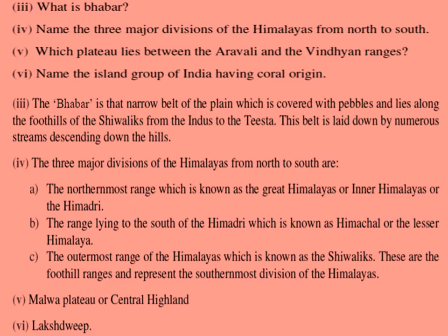Next question: name the three major divisions of the Himalayas from north to south. The answer is — the three major divisions from north to south are: first, the northernmost range known as the Great Himalayas or Inner Himalayas or the Himadri; second, the range lying to the south of the Himadri known as Himachal or the Lesser Himalaya; third, the outermost range known as the Shivaliks, which are the foothill ranges representing the southernmost division of the Himalayas.